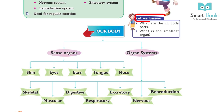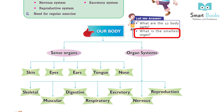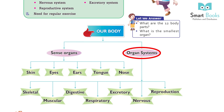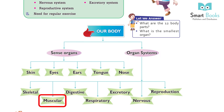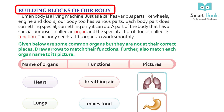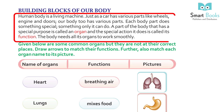Let me answer: what are the 12 body parts? What is the smallest organ? Our body's sense organs are skin, eyes, ears, tongue, and nose. Organ systems include skeletal, muscular, digestive, respiratory, excretory, nervous, and reproductive systems.